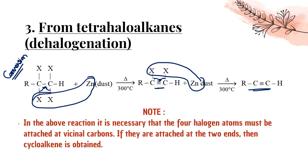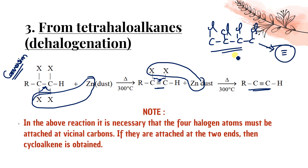Note: in the dehalogenation reaction it is necessary that all four halogen atoms must be attached to vicinal (adjacent) carbons only. If they are attached at the two ends (non-vicinal), then cycloalkyne is obtained instead of a simple triple bond.